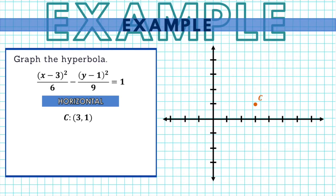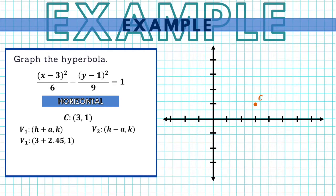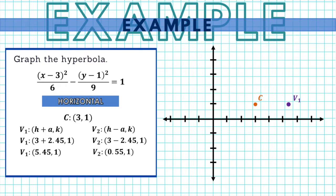Since this is a horizontal hyperbola, the vertices are to the left and right of the center, so we add and subtract a along the x-coordinate (h). Our first vertex is at (3 plus 2.45, 1), which simplifies to (5.45, 1), in the first quadrant. Our second vertex is at (3 minus 2.45, 1), giving us (0.55, 1), also in the first quadrant.